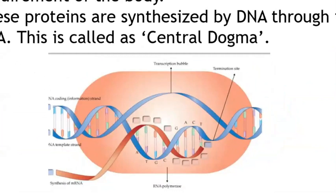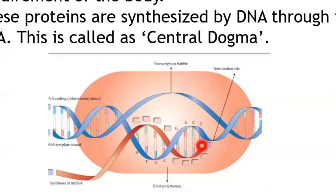There are four types of nitrogenous bases in DNA: adenine, guanine, cytosine, and thymine. Complementary bases: adenine pairs with thymine, cytosine pairs with guanine. When DNA is copied to mRNA, T becomes A, C becomes G, but A does not become T — because RNA does not have thymine. Instead, uracil replaces thymine. This is how the mRNA is produced.